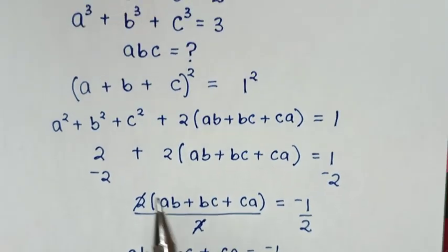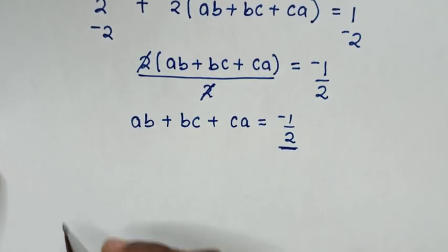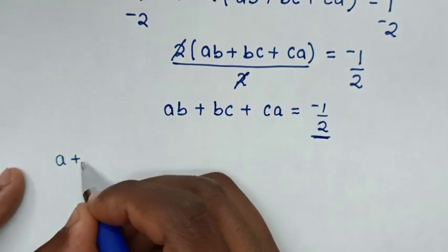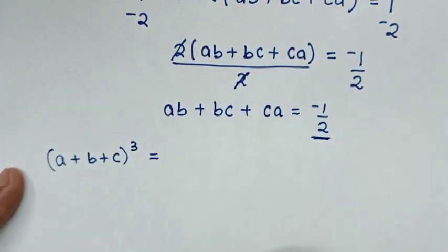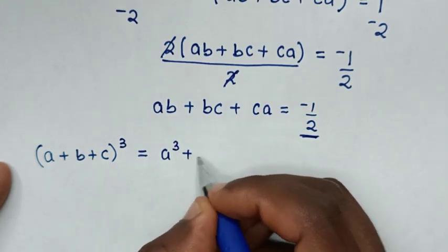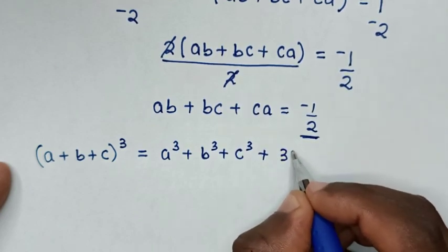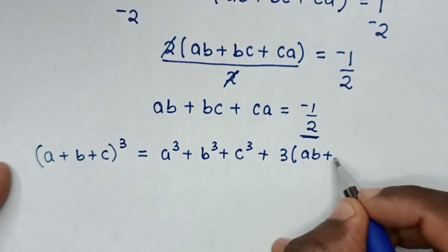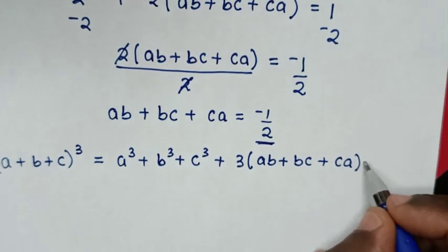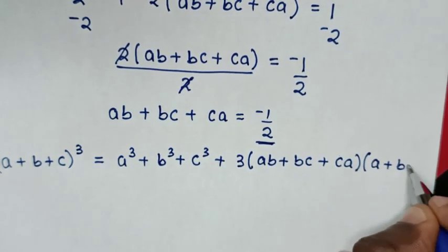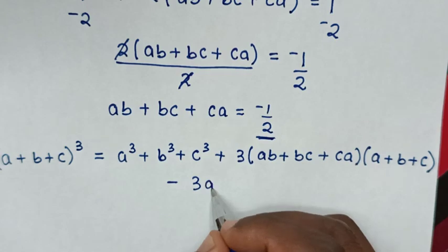In the next step, from the first equation we find the cube of (A plus B plus C). The identity is: (A plus B plus C)³ equals A³ plus B³ plus C³ plus 3(AB plus BC plus CA)(A plus B plus C) minus 3ABC.